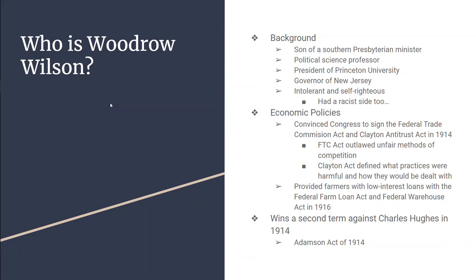A little bit about Woodrow Wilson: he's the son of a southern Presbyterian minister. He grew up in South Carolina and Georgia, went on to be a political science professor at Princeton, then became the president of Princeton and governor of New Jersey. He was very skilled, very flexible, but also very intolerant, self-righteous, and racist.